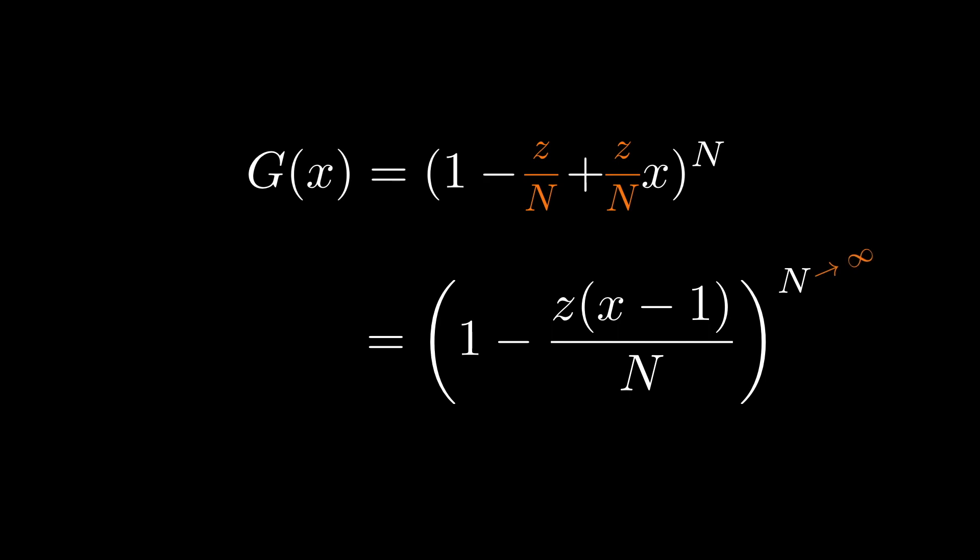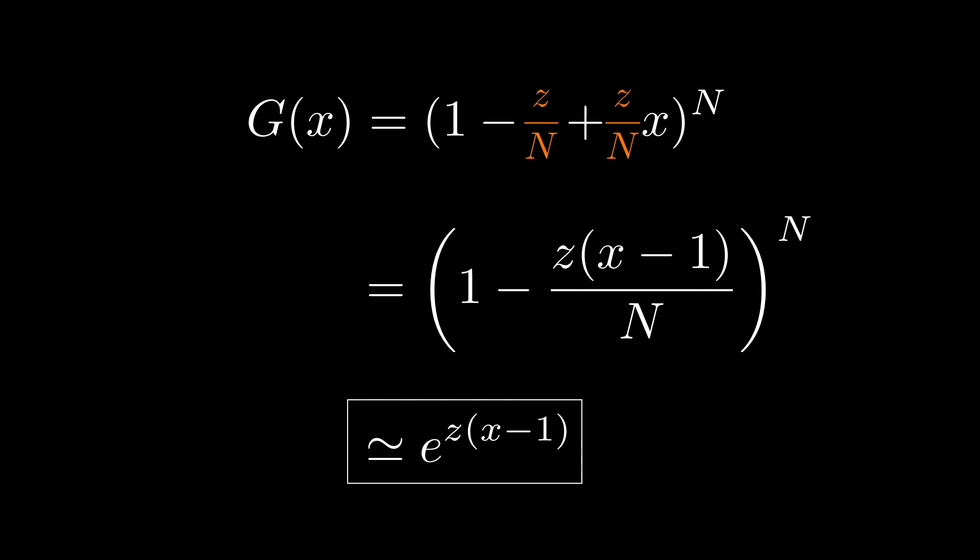Does this look familiar? How about this? Do you recognize it now? So when N goes to infinity, this is just an exponential function. In other words, we can rewrite the original generating function as a simple exponential function.